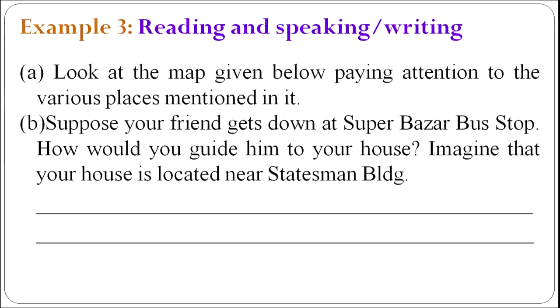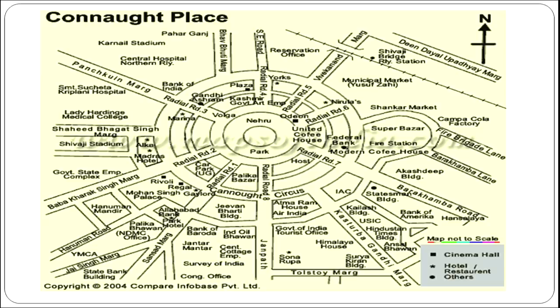Let's take another example — reading with speaking or writing activity. Look at the map given below, paying attention to the various places mentioned in it. Suppose your friend gets down at Super Bazar bus stop — how would you guide him to your house? Imagine your house is located near the Statesman Building. Students have to look at the map, read it carefully, and then supply the answer — write a few sentences or reply orally. You can use another map; it can be a simple map.